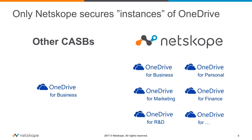Netscope enables you to differentiate between instances of an application. In the example of OneDrive, other CASBs are only able to provide visibility and policy enforcement for one instance of OneDrive. This makes it difficult to govern access and secure usage, since enterprise environments often have both corporate sanctioned and personal instances. Some enterprises also have versions based on department. A coarse-grained approach can disrupt productivity, but Netscope provides a more nuanced approach with the ability to enforce policy by instance, resulting in a safer and more secure experience without disrupting the business.